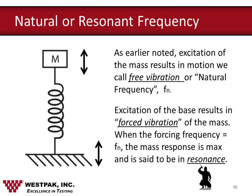Free vibration occurs when the excitation is centered on the mass itself, and the oscillation is referred to as the natural frequency of the spring mass system. When excited on the base, forced vibration results, and when the forcing frequency applied to the base equals the natural frequency of the spring mass system, the system is said to be in resonance.